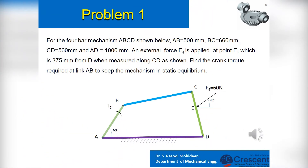Now we are going to apply the concepts of constrained forces and conditions of equilibrium to solve the problem. We have a 4-bar mechanism ABCD shown below. Lengths of link AB = 500 mm, link BC = 660 mm, link CD = 560 mm, and link AD = 1000 mm. An external force F4 is applied at point E, which is 375 mm from point D when measured along link ED. We need to find the crank torque required at link AB to keep the mechanism in static equilibrium.